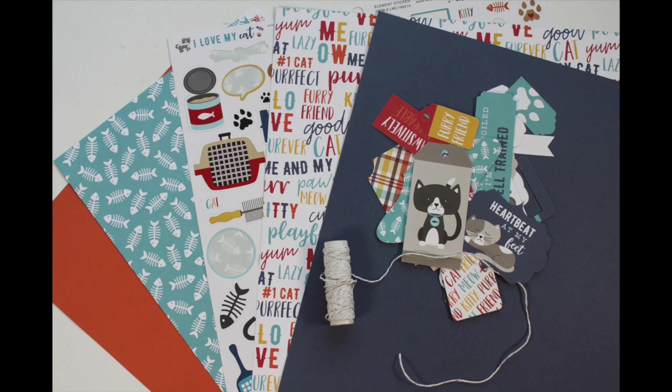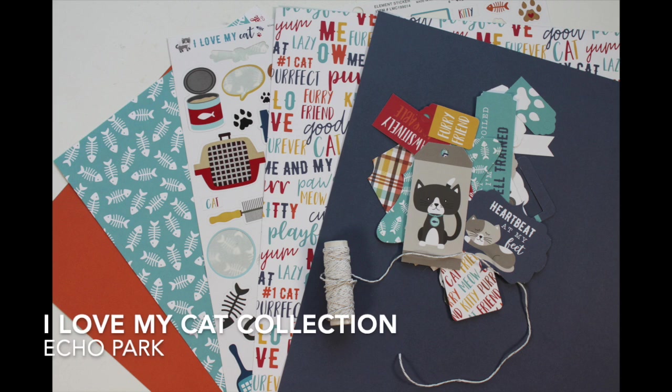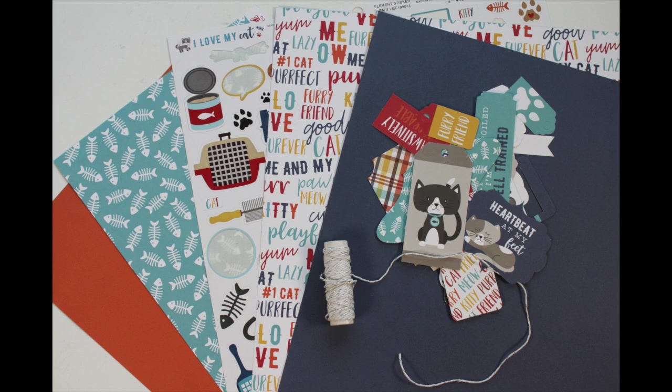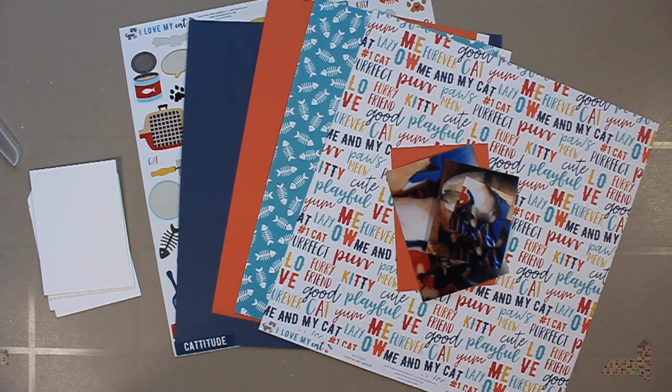This is what I'm going to be using. Basically, it's material from Echo Park's I Love My Cat collection. This is also available in dog-themed, and I got all of this at the Scrapbook Nerd online shop, so I'll link up what I'm using as well as the shop in the information box below.